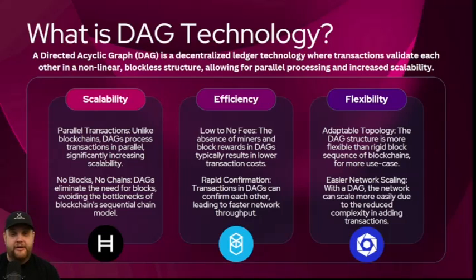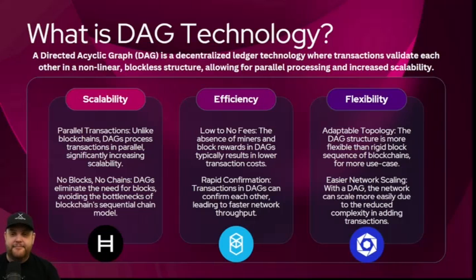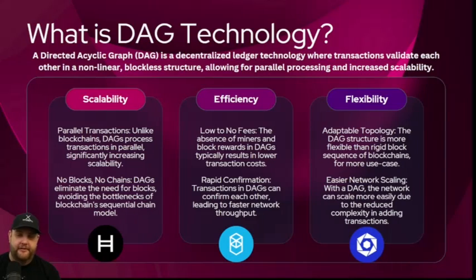One feature of DAGs is parallel transactions. Unlike blockchains, where you think of a linear chain with blocks, DAGs process transactions in parallel, significantly increasing scalability. On a pure DAG, there are no blocks — it's basically just transactions verifying other transactions.